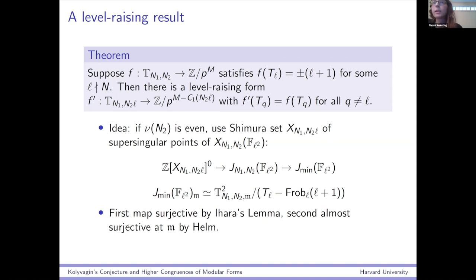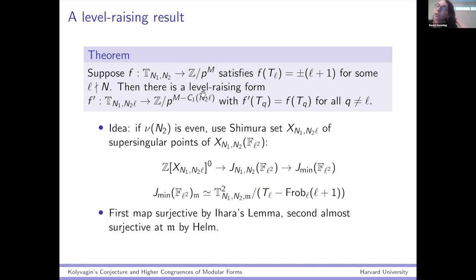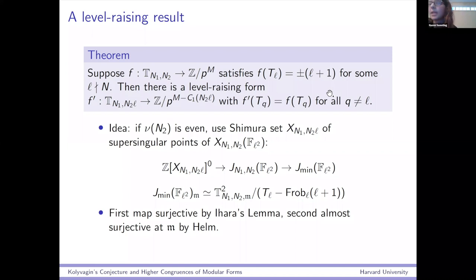Here's the level raising result: take a mod P^M eigenform and suppose that it satisfies this congruence where F(T_L) ≡ ±(L+1). This is the standard level raising congruence for some L not dividing N. Then the output is that there's a level raising form — you started with something N_2-new, and now you get something N_2 L-new, and you get a little error. You might lose a little bit of precision in your form. The Hecke eigenvalues are the same except at L, where something predictable happens.